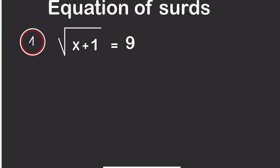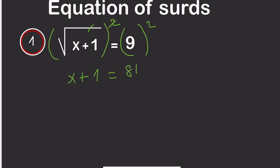Hello everyone. Today we are going to solve equations with square roots. To solve this, we simply need to square both sides. When we square both sides, the square and the square root cancel, leaving us with x plus 1 equals 9 squared, which gives us 81.